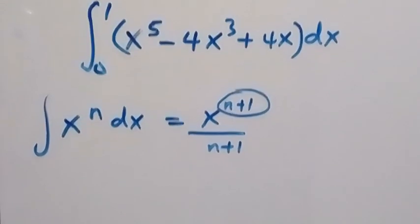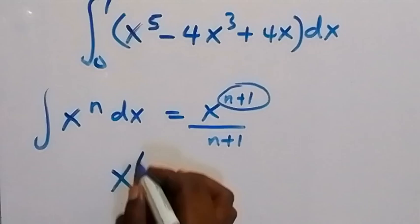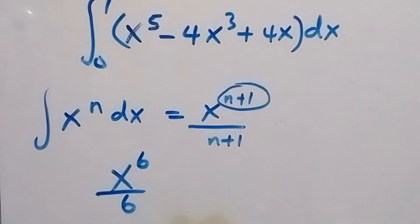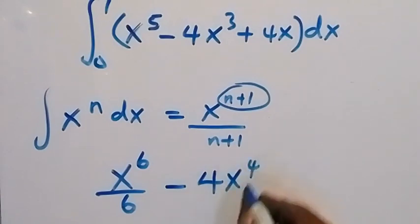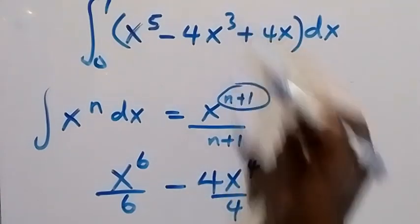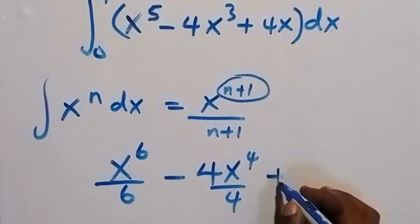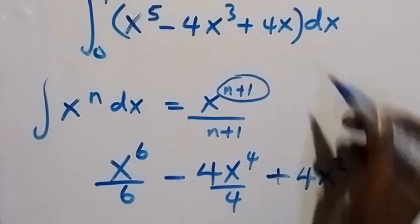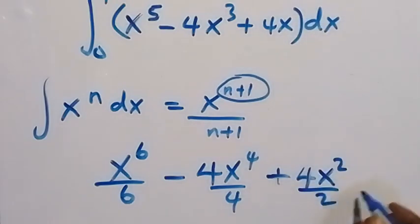Applying that here: x⁵ integrates to x to the power 6 over 6, since 5 plus 1 is 6. Then minus 4 times x to the power 4 over 4, adding 1 to the power and dividing by the new power. Then plus 4x² over 2.